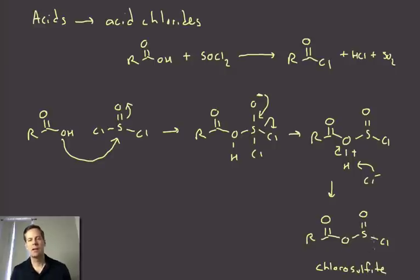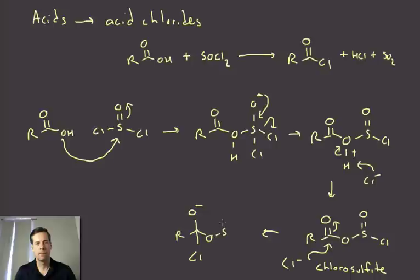So this is called a chlorosulfite. It's kind of like an anhydride, an acid anhydride, but just with a different piece over here. But this piece is very, very electron withdrawing. So this is an extremely electrophilic species. And what can happen here is that chloride, another bit of chloride, can come in and now do a nucleophilic acyl substitution at the carbonyl. So this would give this tetrahedral intermediate.